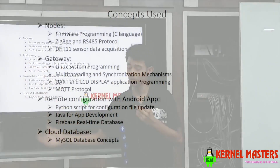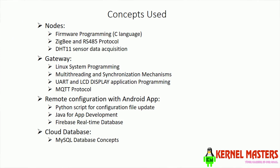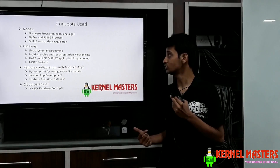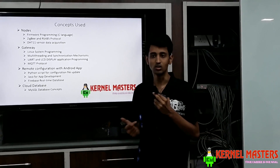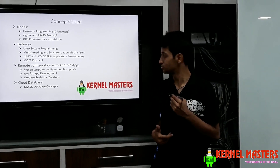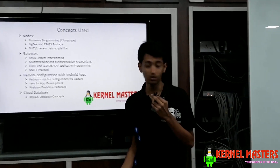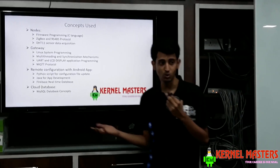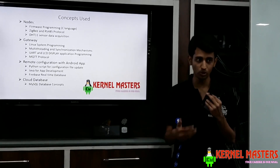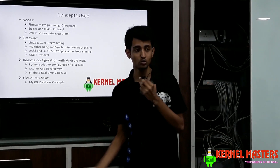Next comes the gateway. For the gateway, the most essential component is Linux system programming, and then multi-threading and synchronization mechanisms, because we are using multiple threads: one thread for transmission, one for receiving data from the nodes, and one for updating the configurations, which runs every 10 seconds. We also used semaphores and signals so that no data is missed. Since we are using UART, we also had to use UART application programming. We also display all data on the on-board LCD, and we got to know about the MQTT protocol.